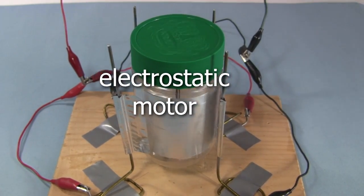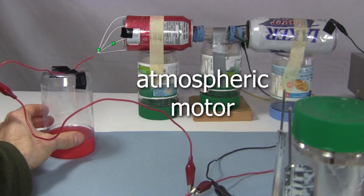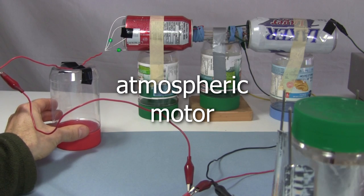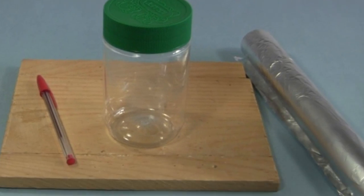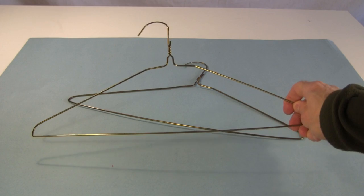It's also sometimes called an electrostatic motor or an atmospheric motor because you can sometimes use ions from the air. This one is intended to be one that anyone can make from very simple materials from around the house.